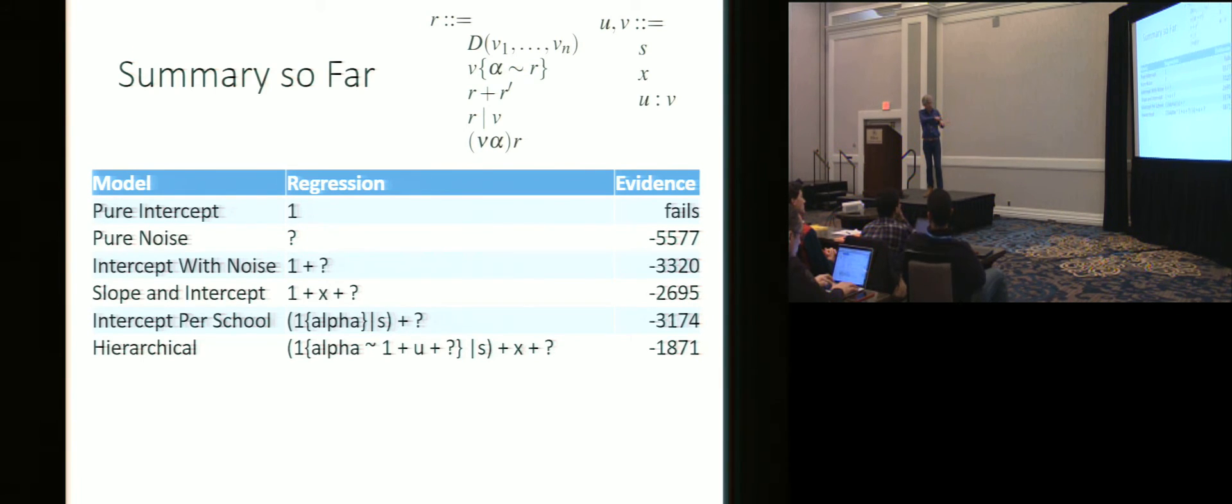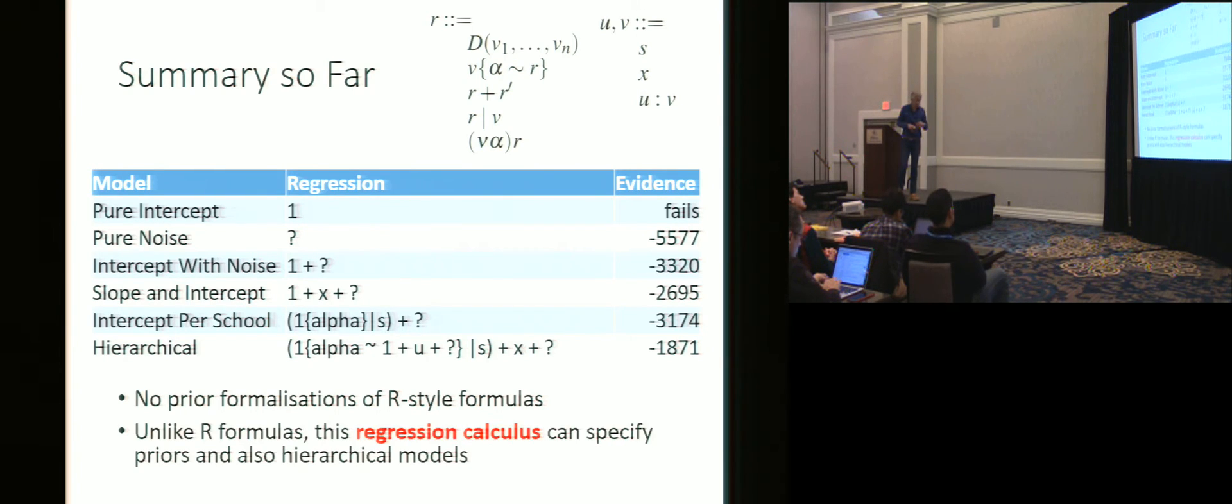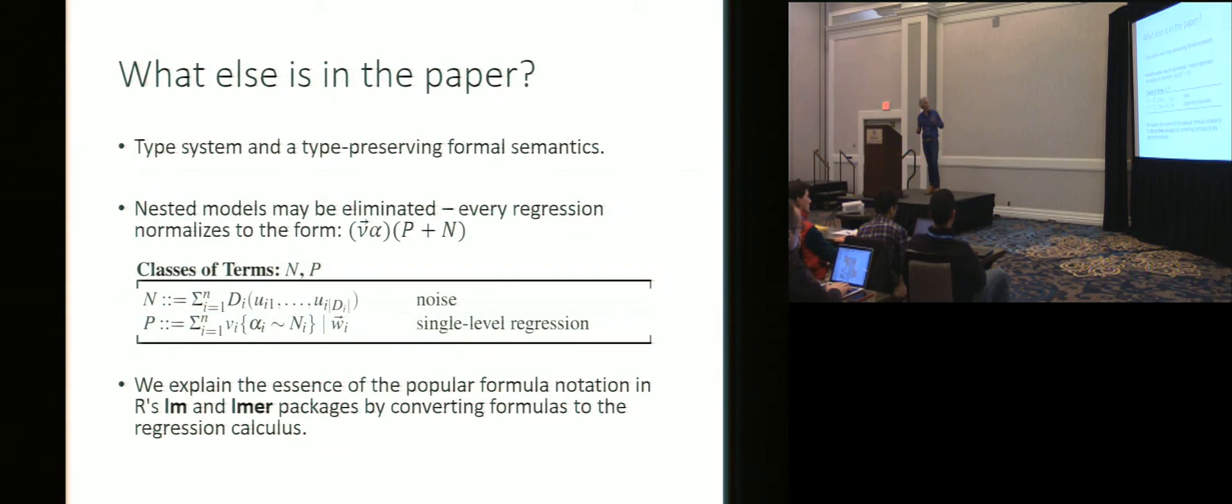The calculus would support data scientists doing that. Just in terms of its contribution to language design, there's no prior formalization of these formulas. The new thing that we get beyond R's existing syntax is that we can define priors using this D syntax here to put distributions into the model. And we can also have hierarchical models. So this recursive syntax is new and is not present in R. You can't do that in R. In the paper, I commend you to go look at the paper if this has got you interested. We've got a type system and a type-preserving formal semantics. It's very cool. There's a beautiful equational theory that is really neat. And we can use that to get regressions down to a normal form.